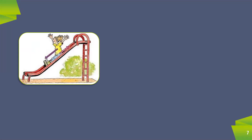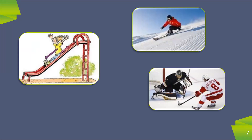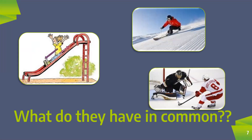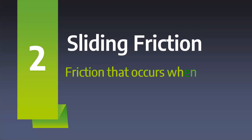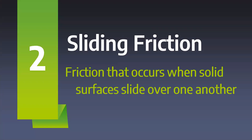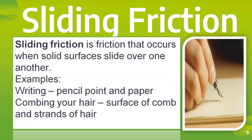In this picture, the girl is sliding, and in the third picture also. You can see the common speciality of these motions — they can be classified as sliding motion. Objects are sliding on the surface of other objects, and the opposite force experienced by the objects due to the surface can be called as sliding friction. Sliding friction is a friction that occurs when solid surfaces slide over one another. For example, a pencil point and paper while writing experience sliding friction, and while you comb your hair, the surface of the comb and the strands of your hair will also be experiencing sliding friction.